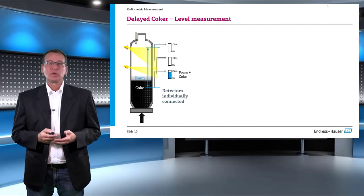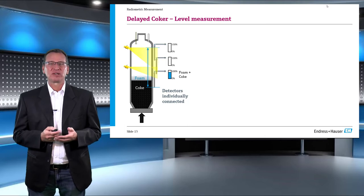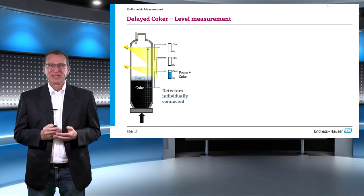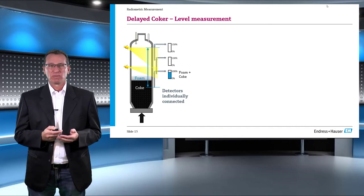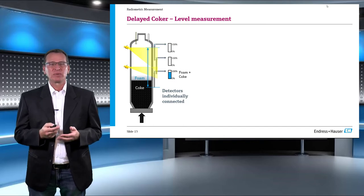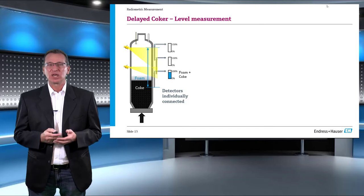In the first case, we see a drum filled with coke and foam level at 80% of the lowest detector. Please note that the difference between foam and coke is not possible at this stage. For vessels of this size and diameter, anything more than 20 kg per cubic meter as a density will absorb the radiation completely.